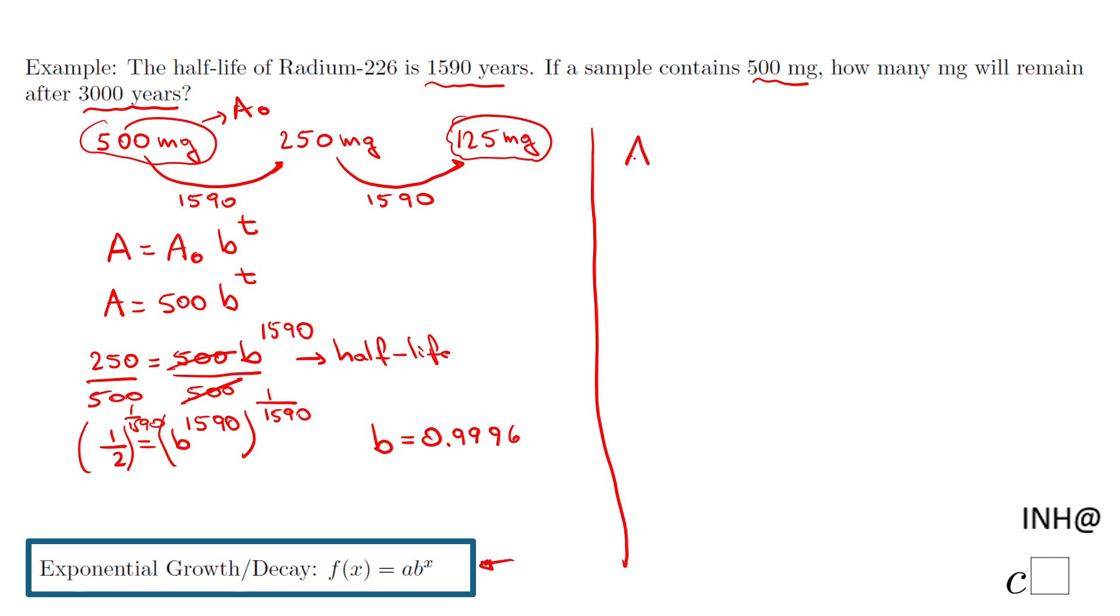Now we can go to the second part where we're going to find the amount after 3000 years, because now we have the equation that models this situation: A equals 500 times 0.9996 to the power of t.